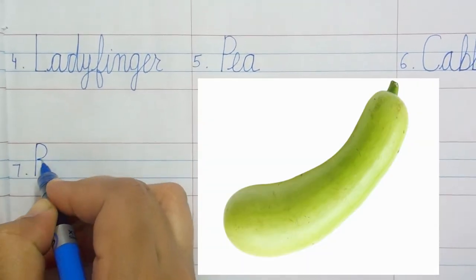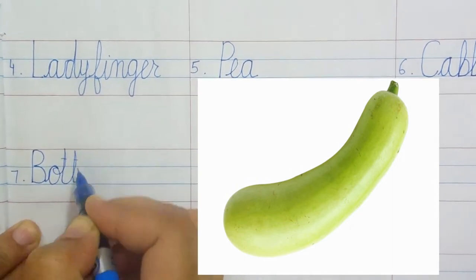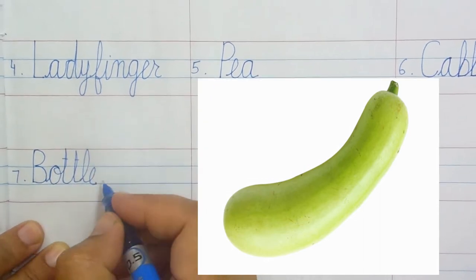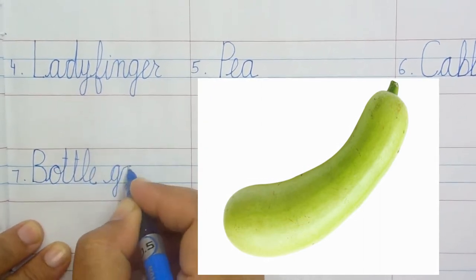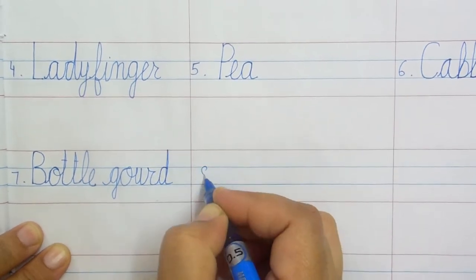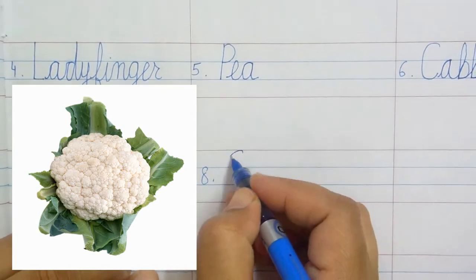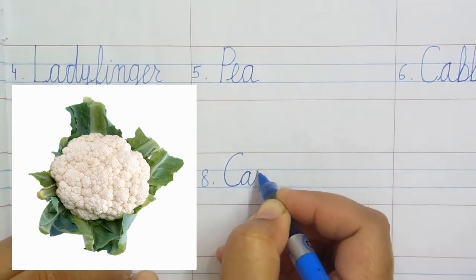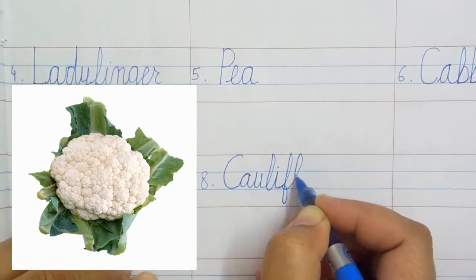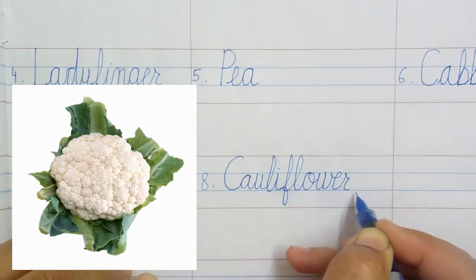Bottle gourd: B-O-double T-L-E G-O-U-R-D, bottle gourd. Cauliflower: C-A-U-L-I-F-L-O-W-E-R, cauliflower.